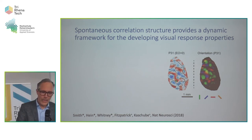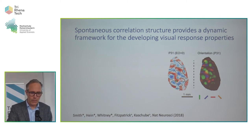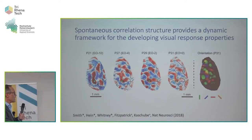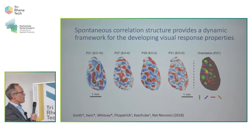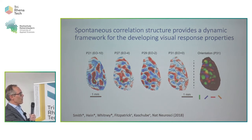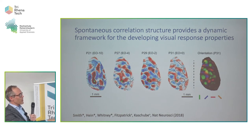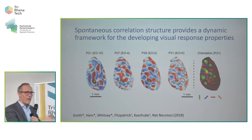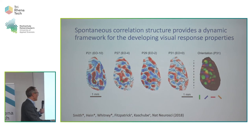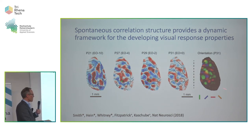We can go back in time because in the same animal we have spontaneous activity recorded prior to eye-opening. What you see is that even four days prior to eye-opening, the correlation structure of spontaneous activity already shows some of the features that it shows at eye-opening. All of that develops basically without structured visual input. But the representations of visual input that pop up at eye-opening actually take over this structure to some extent.